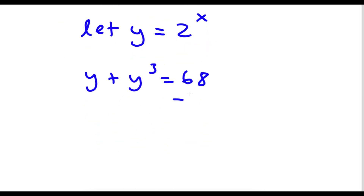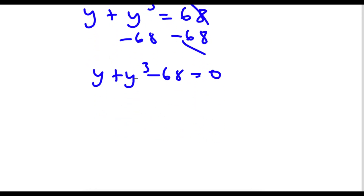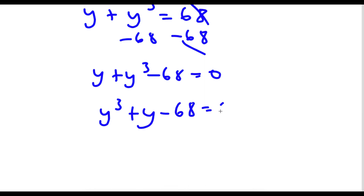Now if I subtract 68 on both sides, I get y plus y to the power of 3 minus 68 is equal to 0. I'm going to rearrange the order from highest degree to lowest degree, so this becomes y to the power of 3 plus y minus 68 is equal to 0.